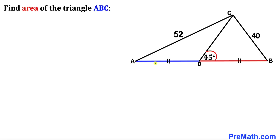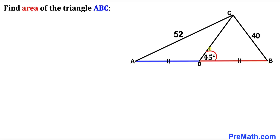Welcome to pre-math. In this video we have triangle ABC such that its side length AC is 52, the other side length BC is 40, and moreover this line segment AD is equal to this line segment BD, and this angle BDC is 45 degrees. Our task is to calculate the area of this triangle ABC.